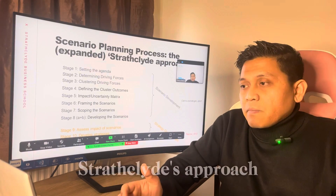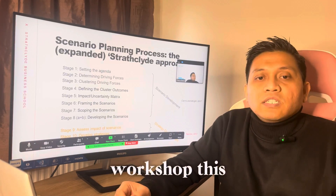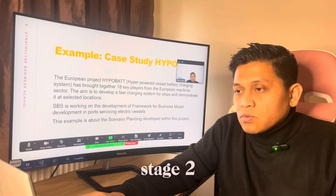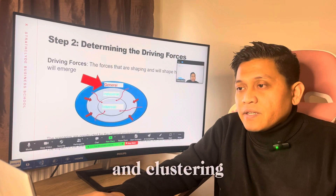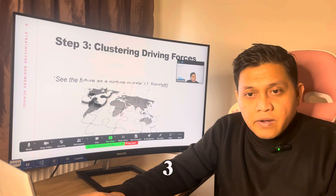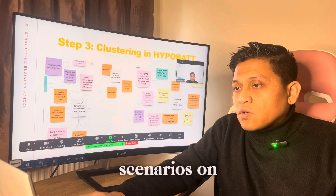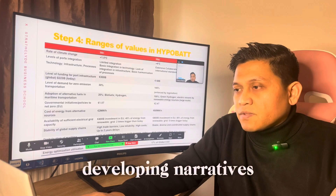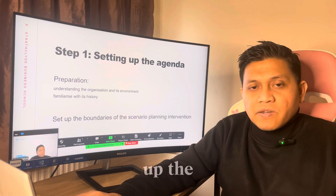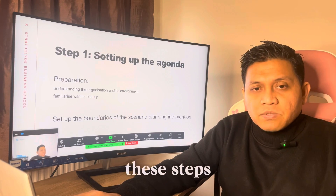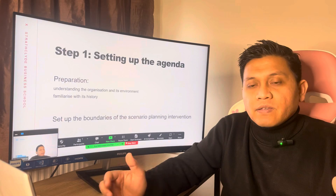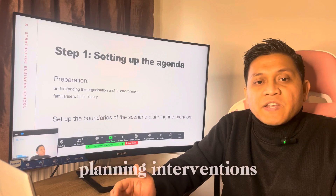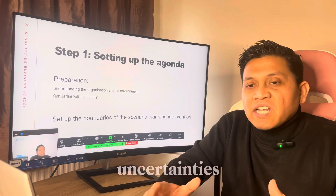We are going to explore the expanded structured approach to scenario planning in this workshop. This method includes: Stage 1 — setting the agenda; Stage 2 — determining driving forces; Stage 3 — clustering these driving forces; Stage 4 — developing scenarios; and subsequent stages for developing narratives and so forth. Stage 1 involves understanding the organizational context and identifying the key forces that will shape the future. It's crucial to set clear boundaries for our scenario planning interventions and to identify the most significant alternatives we need to address.